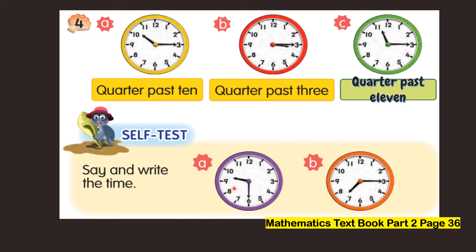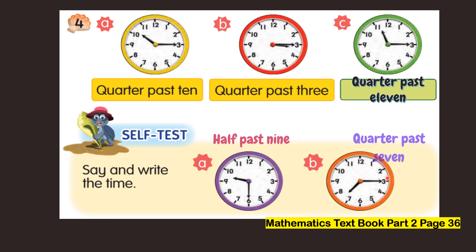Say and write the time. Look at this clock face. The hour hand is between nine and ten and the minute hand points to number six — this is what we call half past nine. For the next one, the hour hand points to seven and the minute hand points to three, so this is quarter past seven.